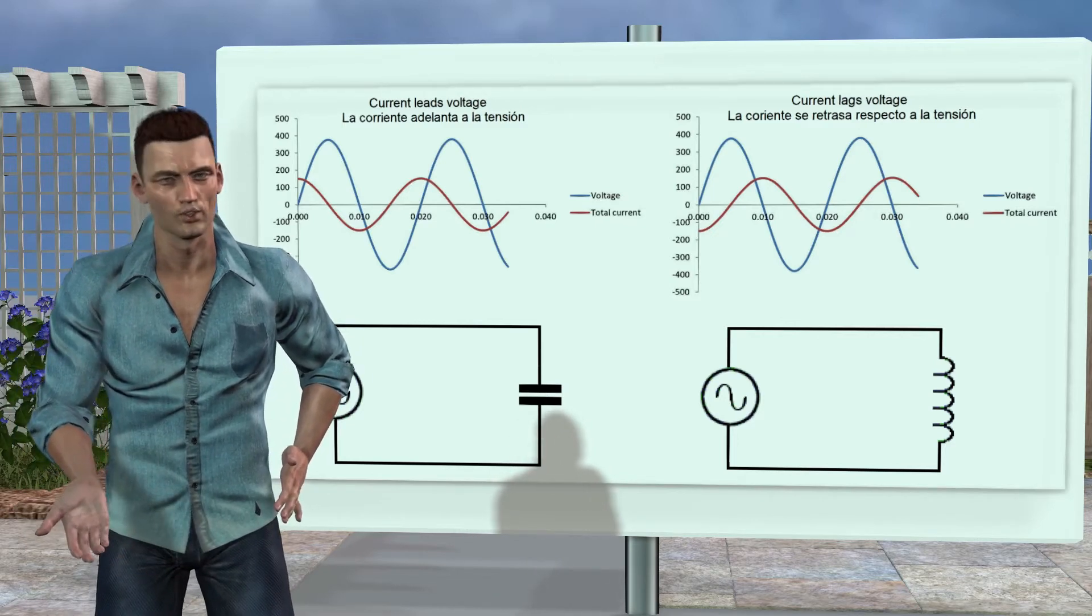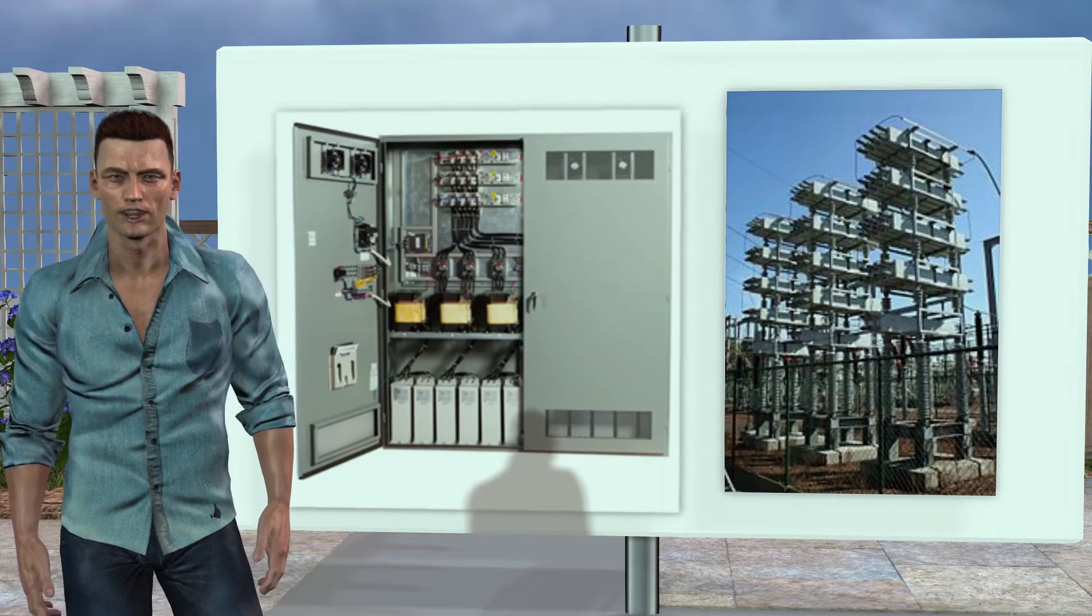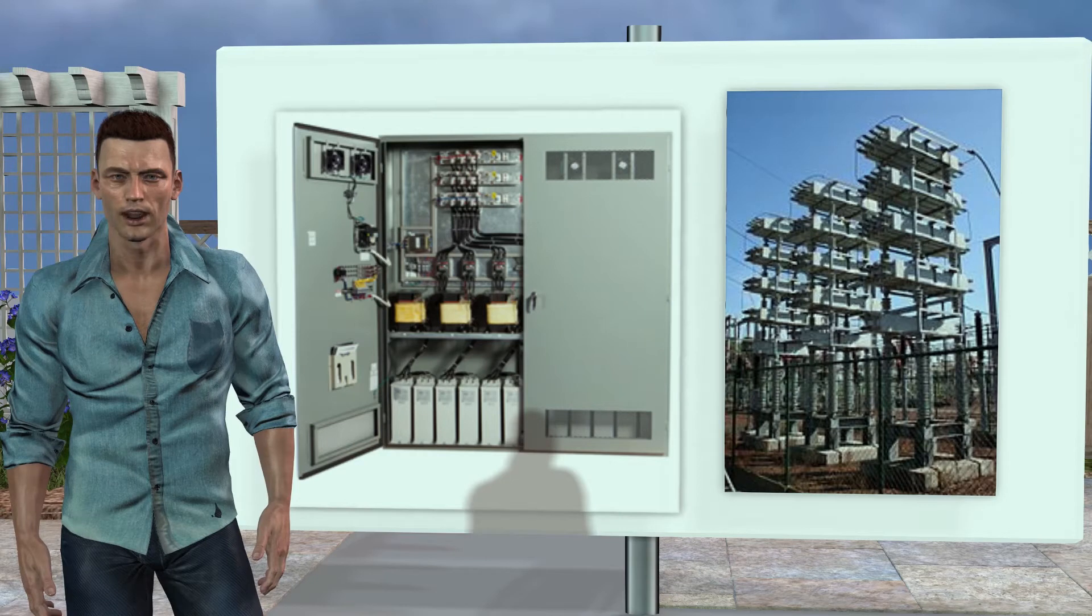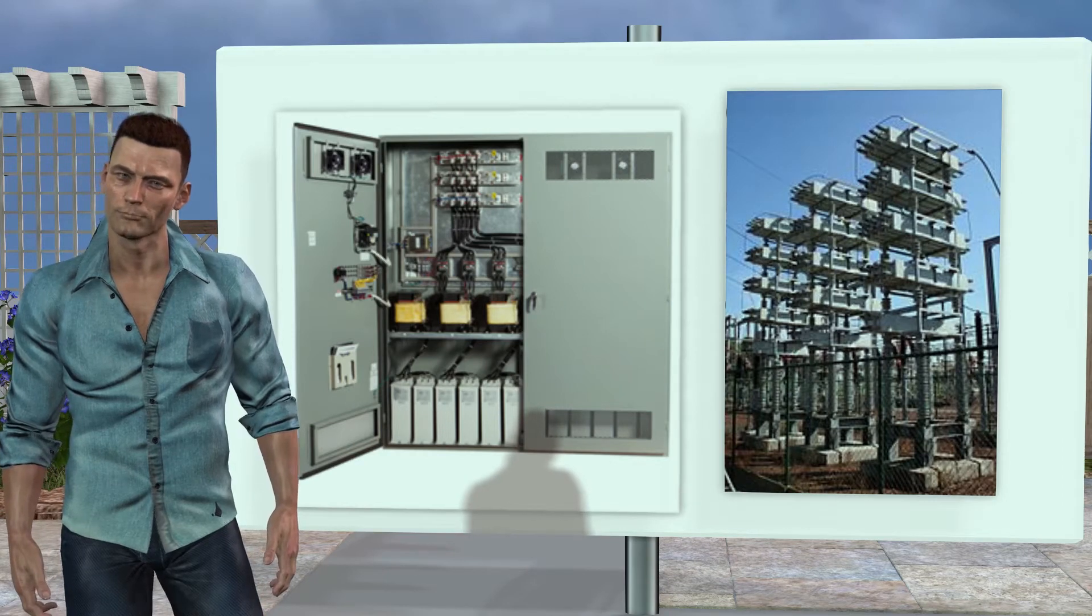This means that coils and capacitors give rise to opposite phase shifts, this being the basis for using capacitor banks in installations with many motors, in order to compensate for the inductive reactive power generated by motors in the installation.